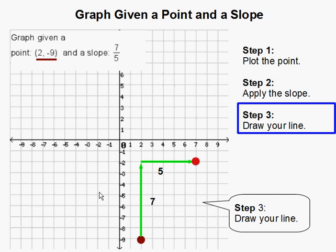Step 3. Draw your line. Then you just simply connect those two points. And don't forget to draw arrows at the end of your line to indicate that the line is continuous. This completes our problem.